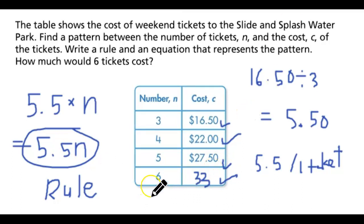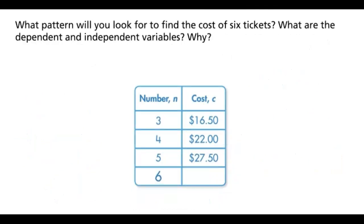In case there is an n, we don't know what number of tickets you're going to buy. Your cost is going to be 5.5 times whatever the n is going to be. You could just write 5.5n as the cost for n number of tickets. What are the dependent and independent variables? Why?